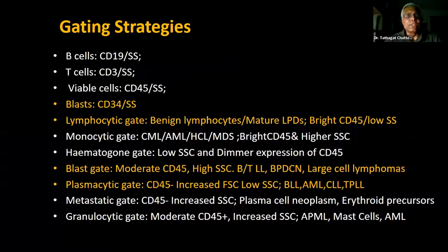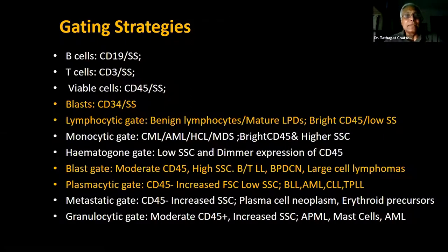Gating strategies for CLPDs: use CD19 vs. side scatter for B cells; CD3 vs. side scatter for T cells; CD45 vs. side scatter for viable cells; and CD34 side scatter for blasts. The lymphocytic gate gives benign lymphocytes and mature lymphoproliferative disorders — bright CD45 with low side scatter. The monocytic gate gives CML, AML, with bright CD45 and high SSC. The hematogon gate shows low side scatter and dimmer CD45. The blast gate shows moderate CD45 and high side scatter, capturing lymphoblastic and large cell lymphomas. The plasmacytic gate has CD45 negativity with increased forward scatter and low side scatter.